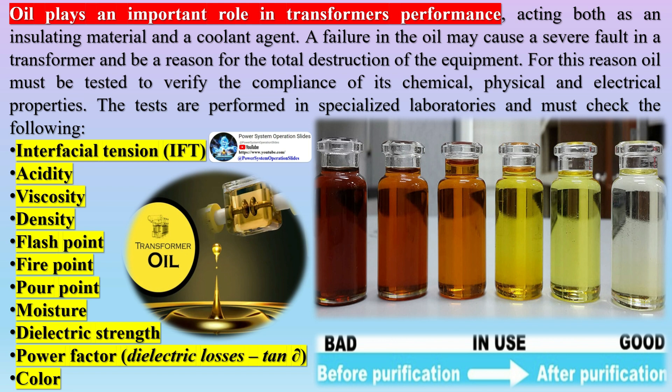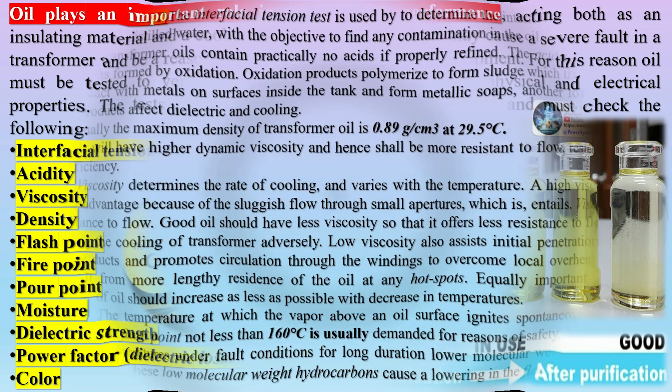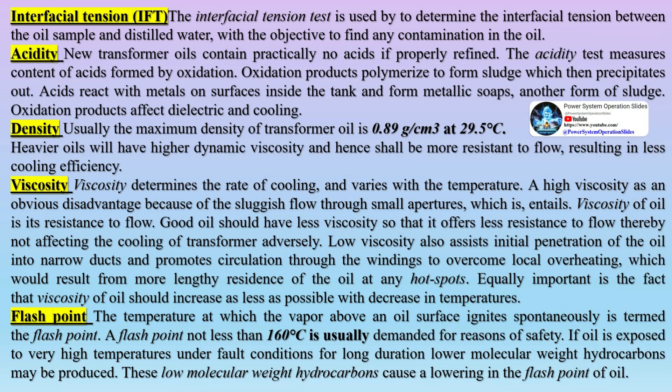Acidity: new transformer oils contain practically no acids if properly refined. The acidity test measures content of acids formed by oxidation. Oxidation products polymerize to form sludge which then precipitates out. Acids react with metals on surfaces inside the tank and form metallic soaps, another form of sludge. Oxidation products affect dielectric performance and cooling.